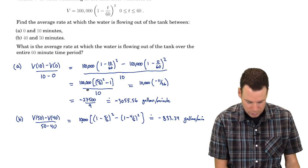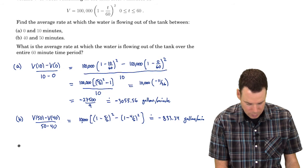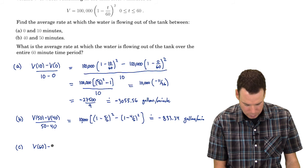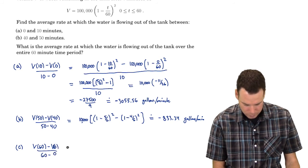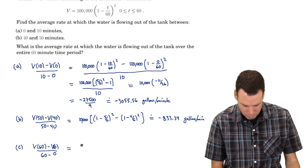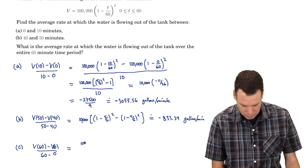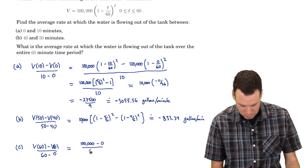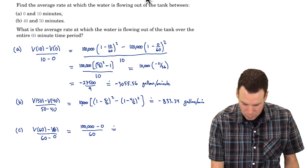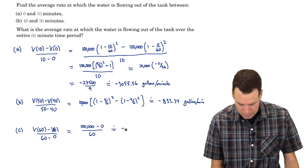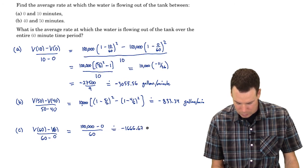What is the average rate of change over the entire sixty-minute interval? That would be V of sixty minus V of zero, all over sixty minus zero. The volume at sixty is zero and at zero is one hundred thousand, so this gives approximately negative one thousand six hundred and sixty-six point six seven gallons per minute.